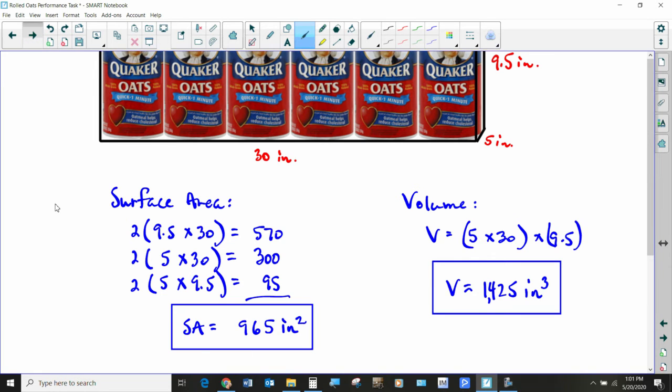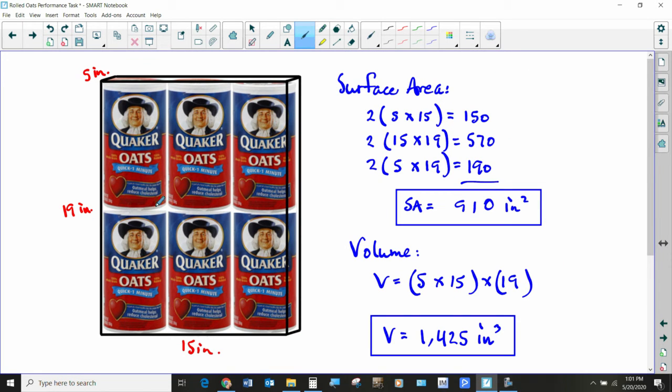When you multiply base area times the height, we got 1,425 cubic inches, just like on the previous one. That's interesting. Now, if we go with this configuration where they're three in a row, but stacked three on top of the other three, so they only go one deep. And that means that they're 15 inches wide for this box and 19 inches tall since 9.5 times two is 19 inches.